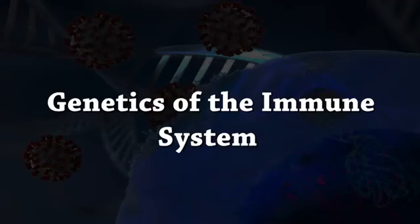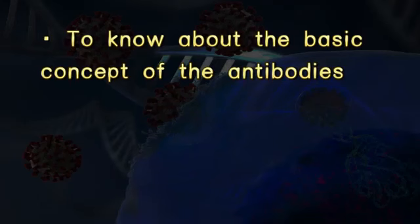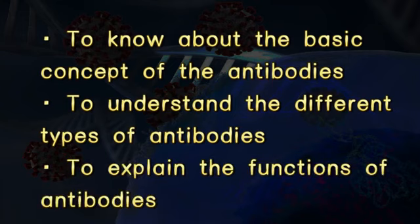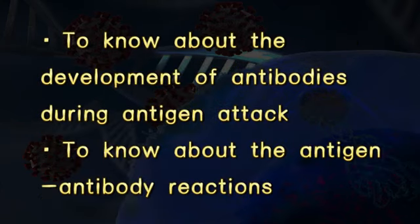Dear students, Model 28: genetics of the immune system. The main objectives are to know about the basic concepts of antibodies, to understand different types of antibodies, to explain the functions of antibodies, to know about the development of antibodies during antigen attack, and to know about the antigen-antibody reactions.